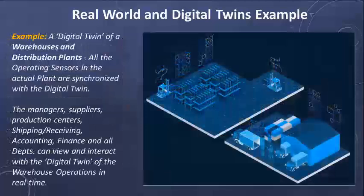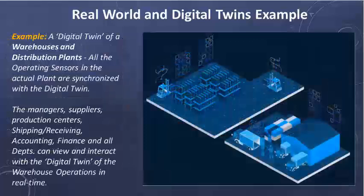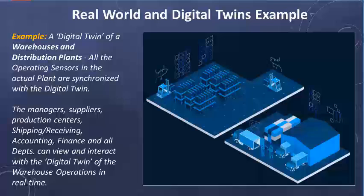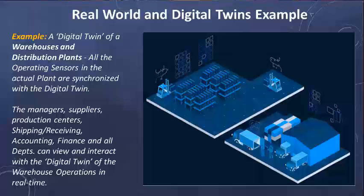This is another example of a digital twin of a warehouse and distribution center. All the operating sensors of the actual warehouse and plant are synchronized with the digital twin, including copies of the actual transport trucks, machinery, and cranes. The managers, suppliers, production centers, shipping and receiving, accounting, finance, and all departments can view and interact with the digital twin of the warehouse operations in real time.